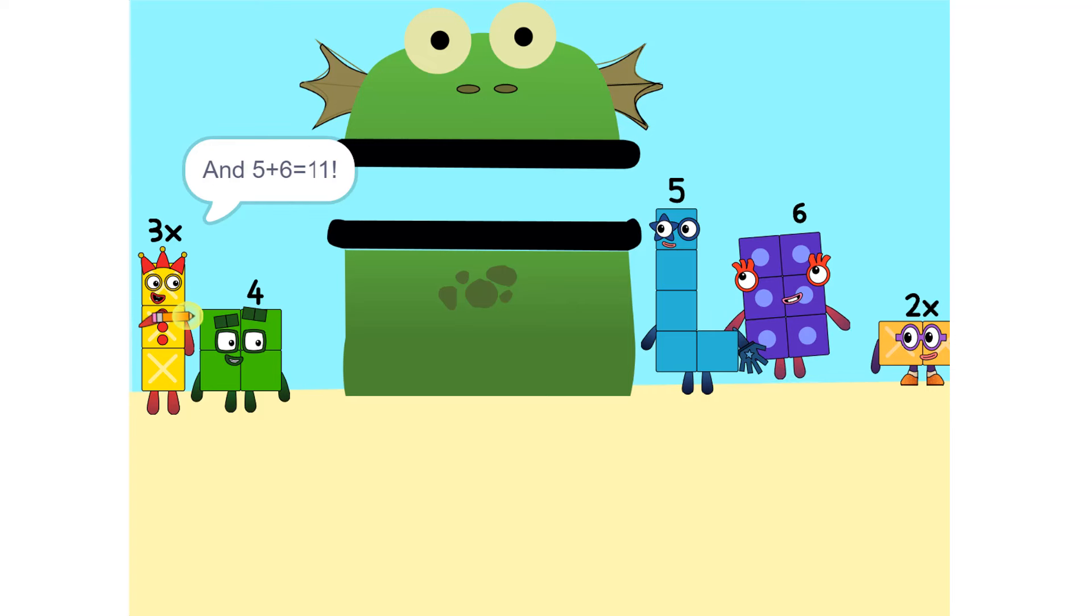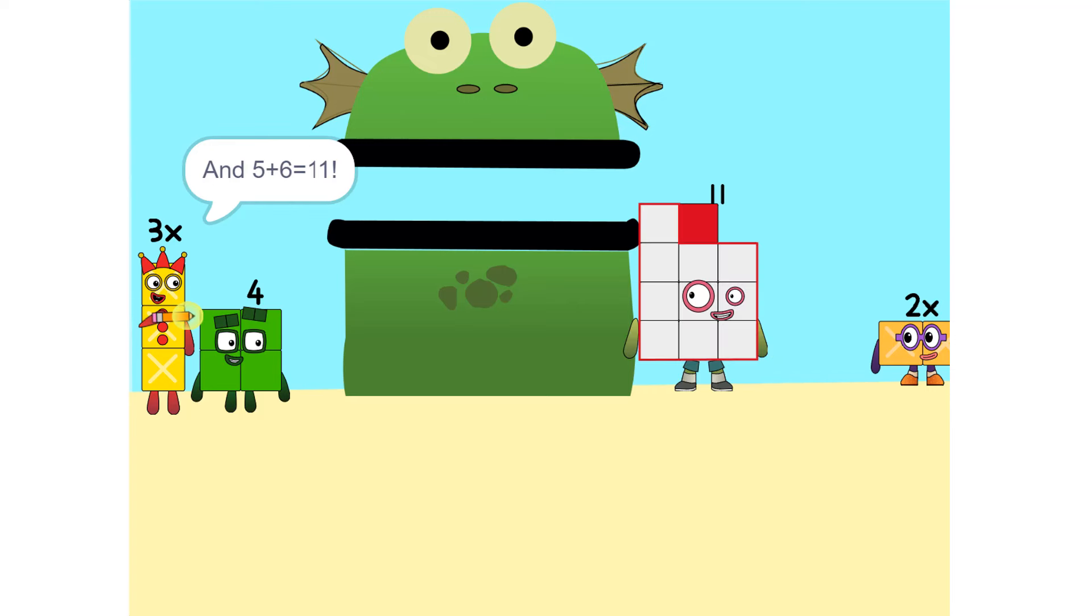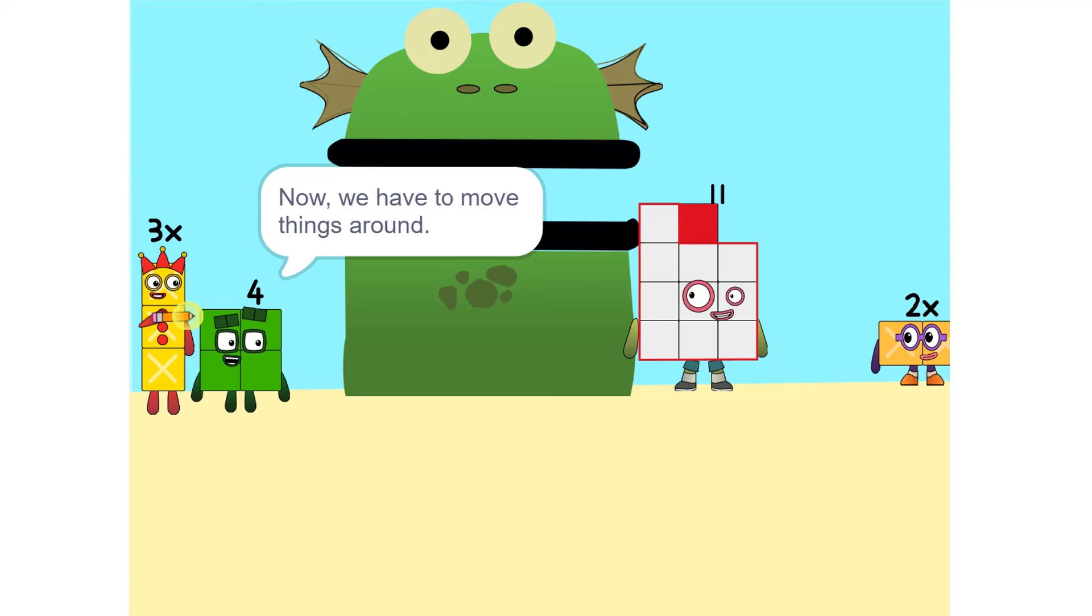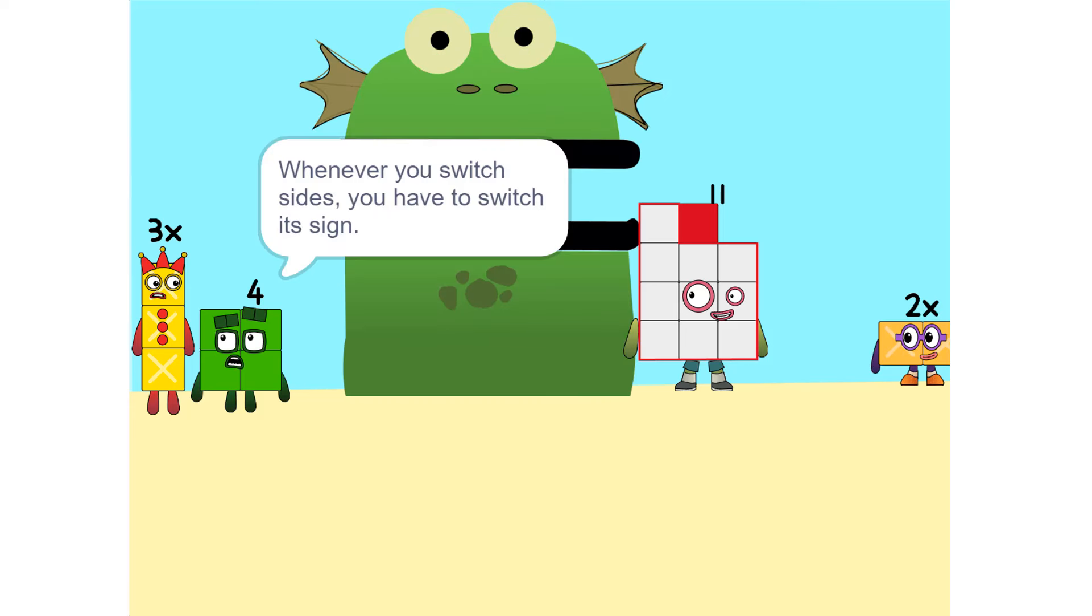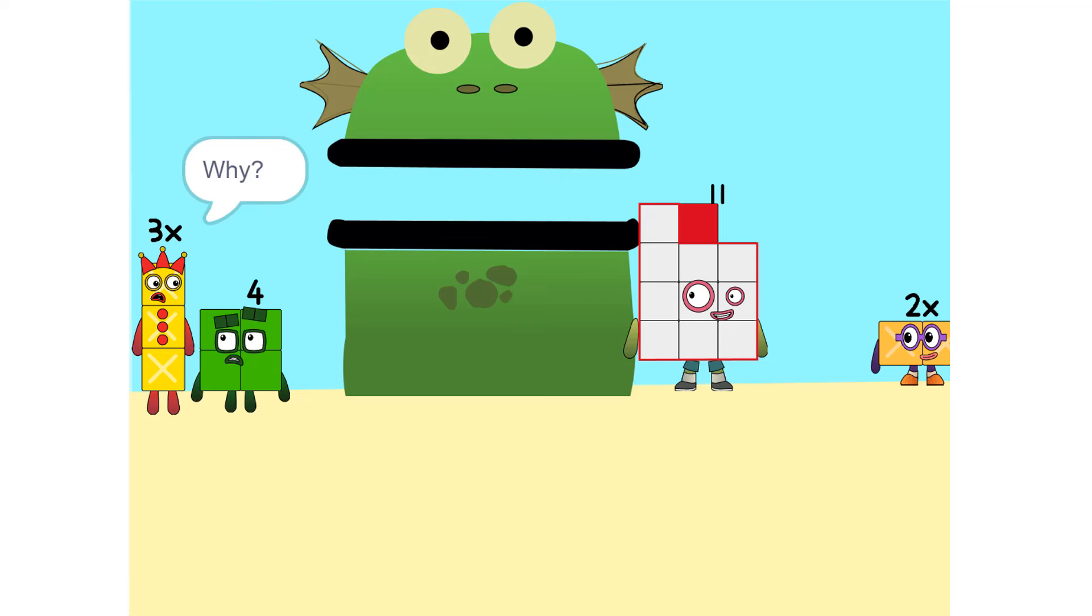Now we have to move things around. We have to move this 2X to this side. So 5X? Whenever you switch sides, you have to switch its sign. So if it's positive, it becomes negative and vice versa. Why? Think of it this way. You're subtracting 2X from each side. Oh.